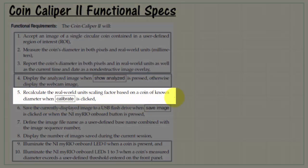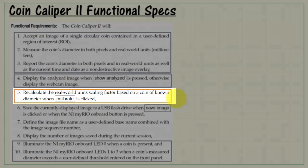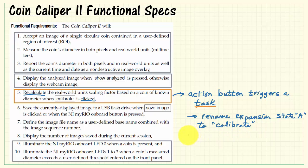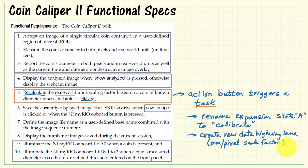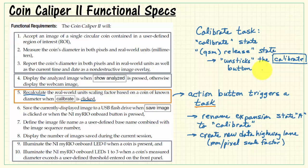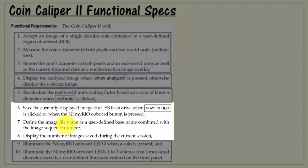Specification number 5: recalculate the real-world unit scaling factor based on a coin of known diameter when Calibrate is clicked. The keyword here is recalculate when the button is clicked — this is a one-time action triggered by the action button. I'll rename expansion state A to Calibrate and then create a new data highway lane to store the millimeters-per-pixel scale factor. We will also need to create a new action button called Calibrate. The Calibrate task will be the Calibrate state followed by the QSM release state, which must always be the last state in any action task because it releases, or unsticks, the front panel control button.